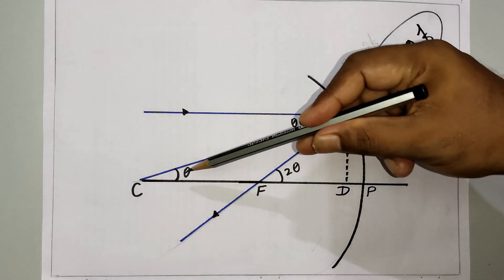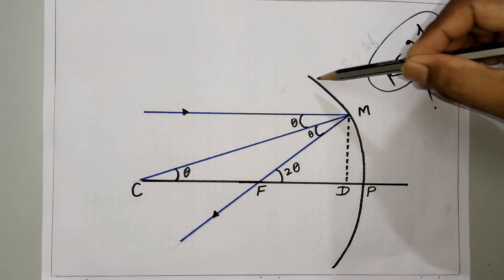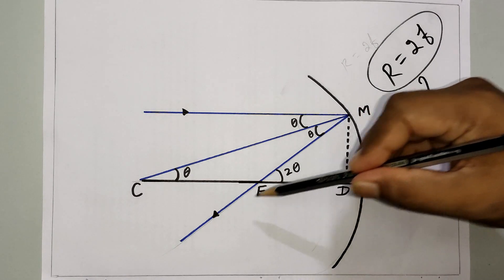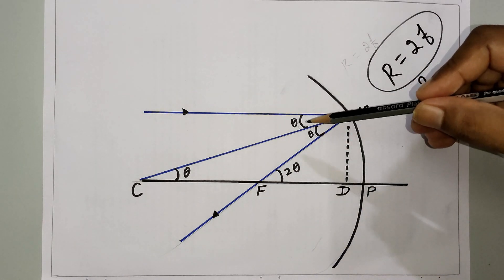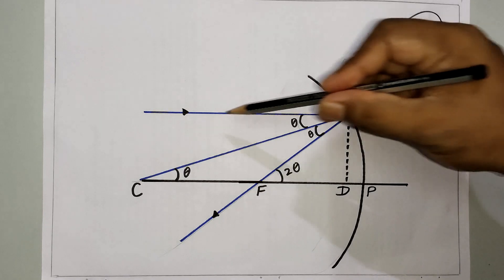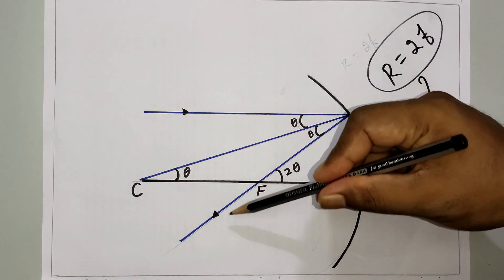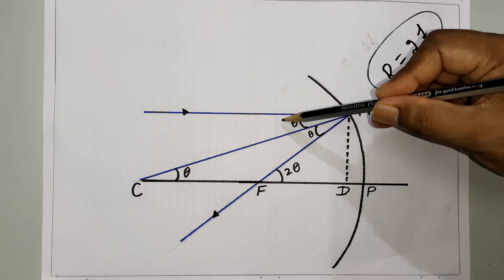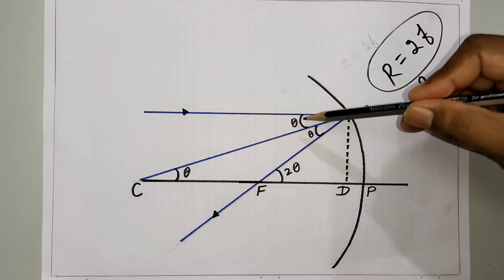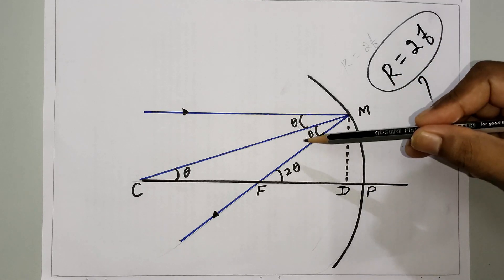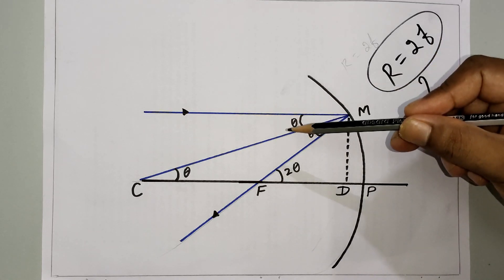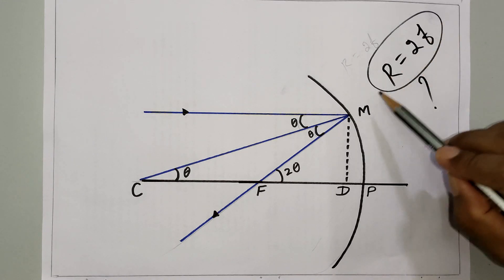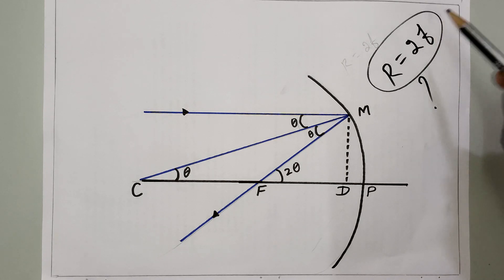Consider a ray parallel to the principal axis striking the mirror at point M. Afterwards it is reflected through the focal point F. According to the law of reflection, between the incident ray and the reflected ray there is a normal line, and the angle of incidence equals the angle of reflection — i equals r. From these two points we are going to find out how R equals 2f.